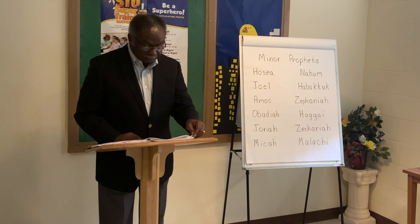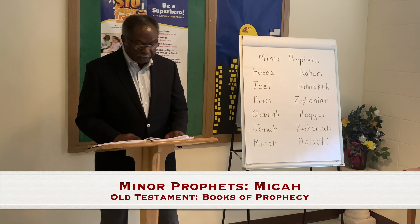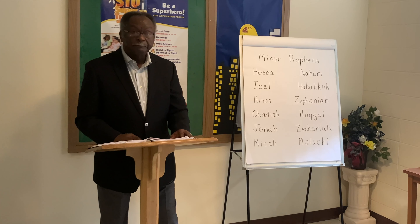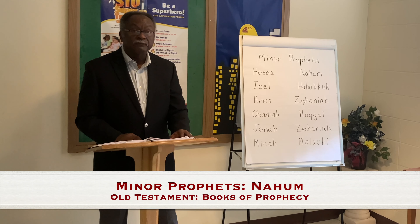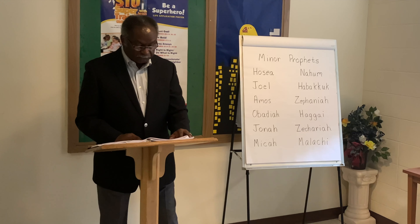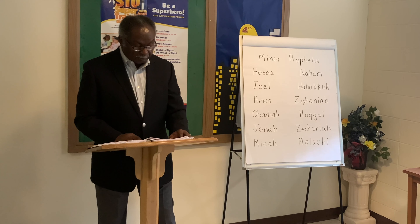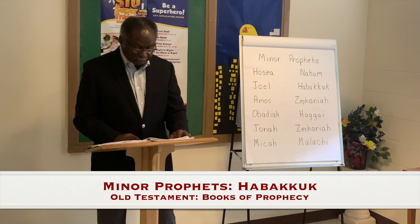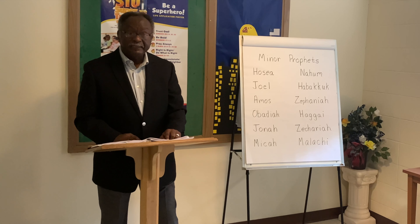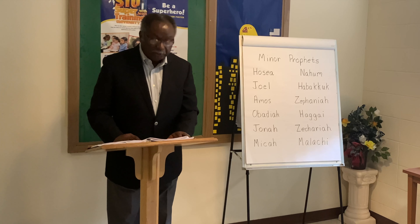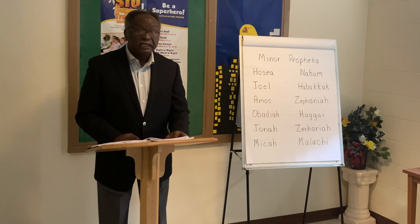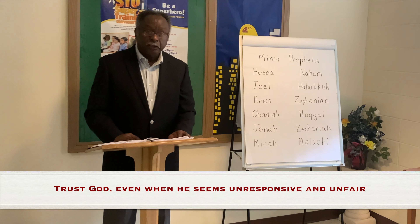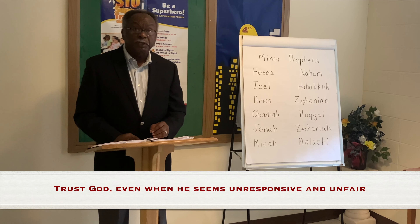Micah is known for predicting the destruction of Jerusalem and Samaria — Israel and Judah will suffer for their idolatry and injustice. Nahum is known for writing about the fall of the Assyrian empire — wicked Nineveh will fall before God's judgment. Habakkuk records a dialogue between the prophet and God. Habakkuk asks some of the same questions people are puzzled by today: Why do the wicked prosper and good people suffer? Why doesn't God stop the evil? Why doesn't God punish evil? The prophet gets specific answers from God: trust God, even when he seems unresponsive and unfair.